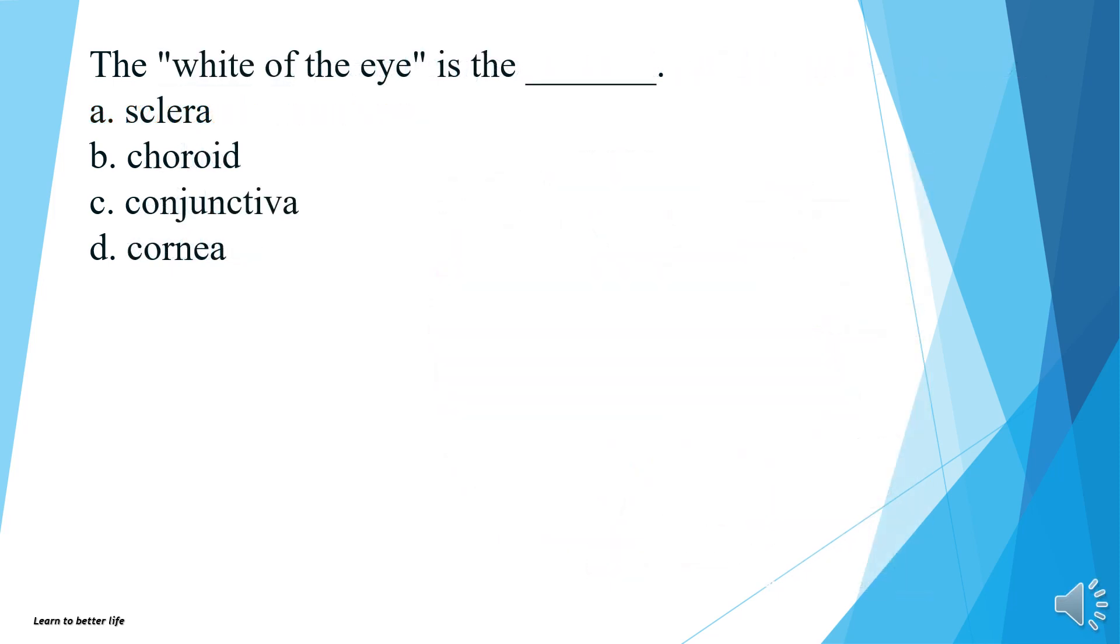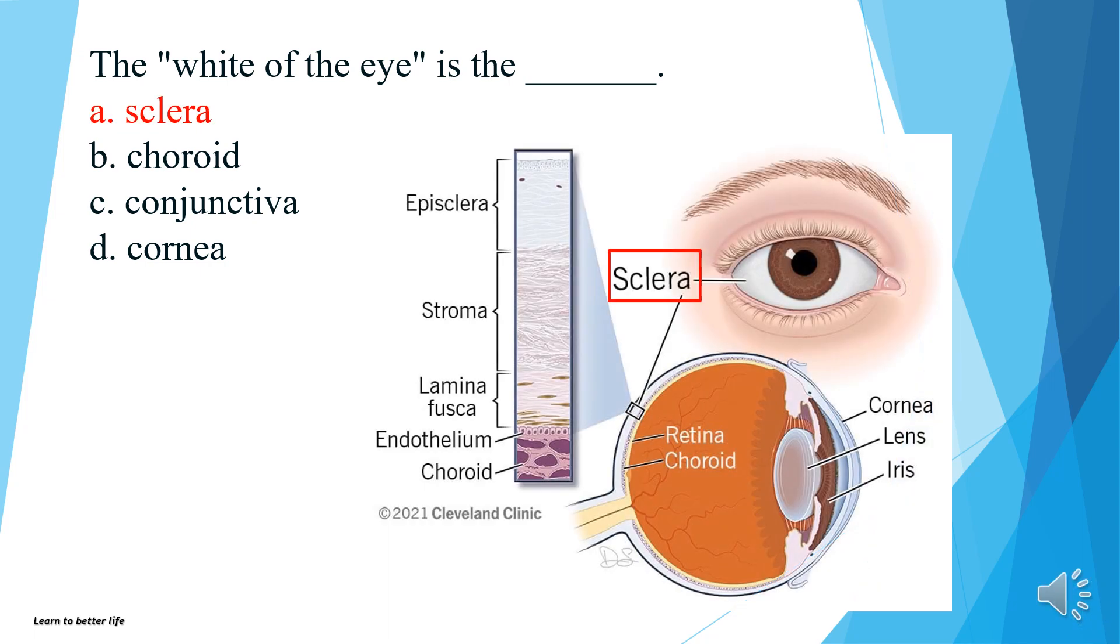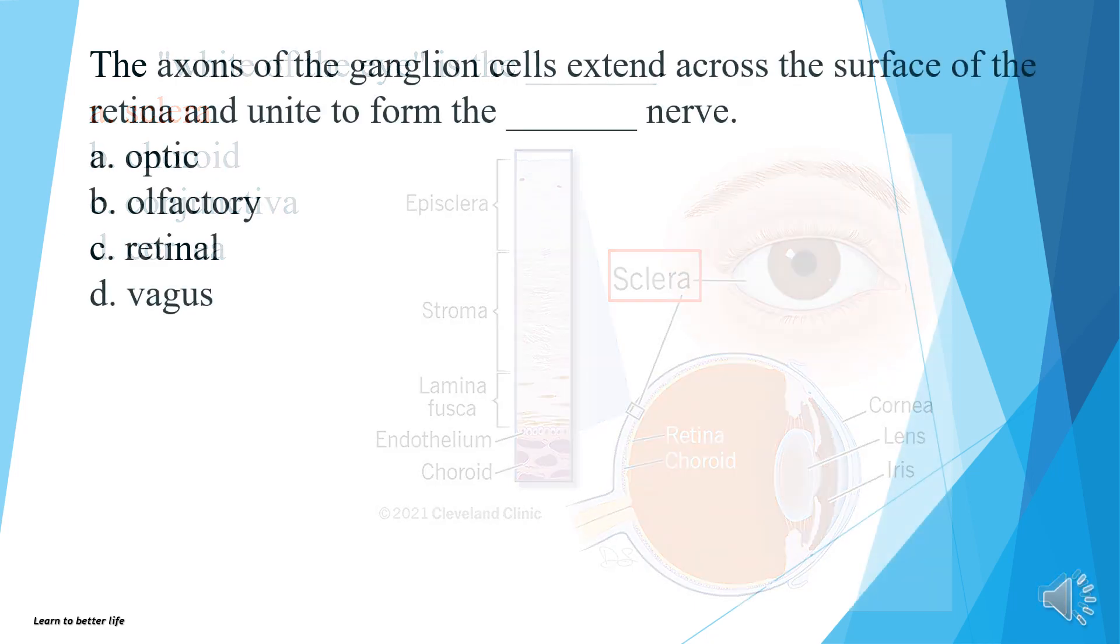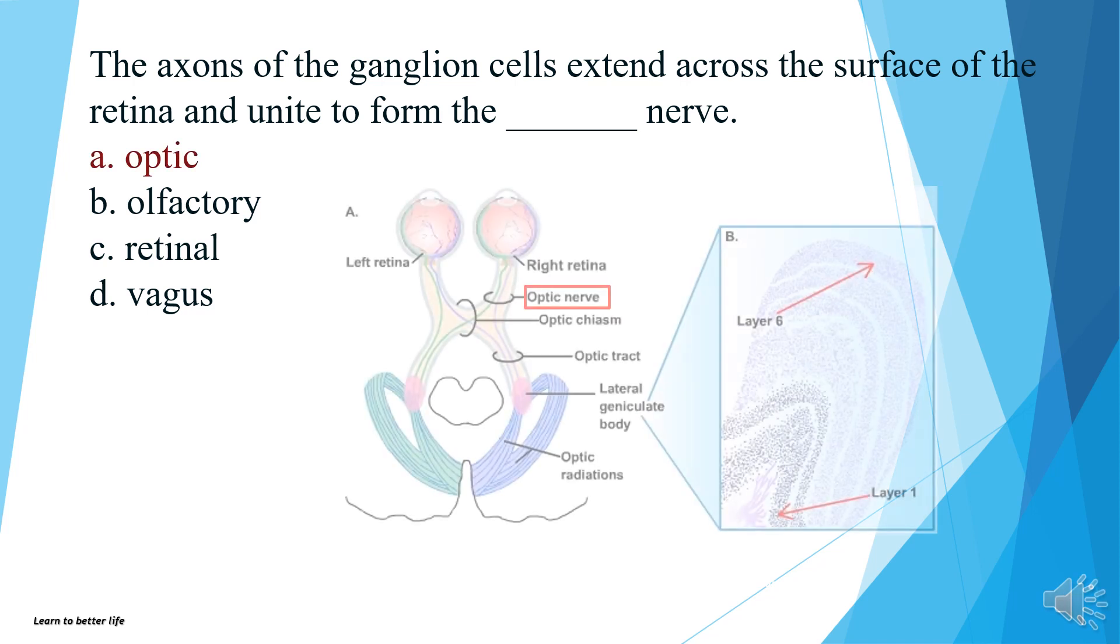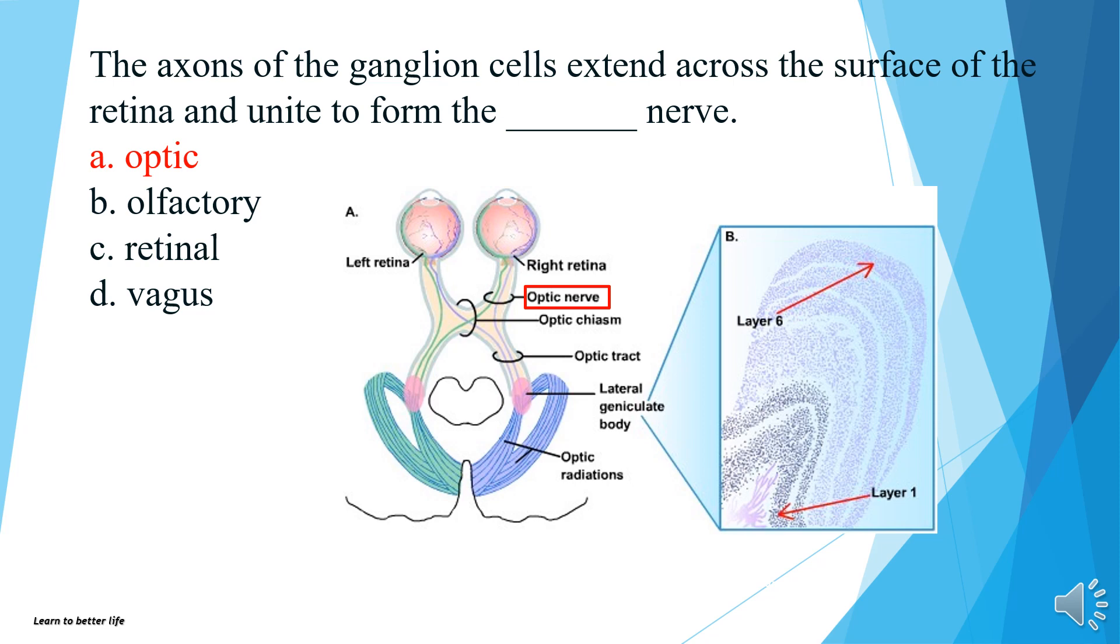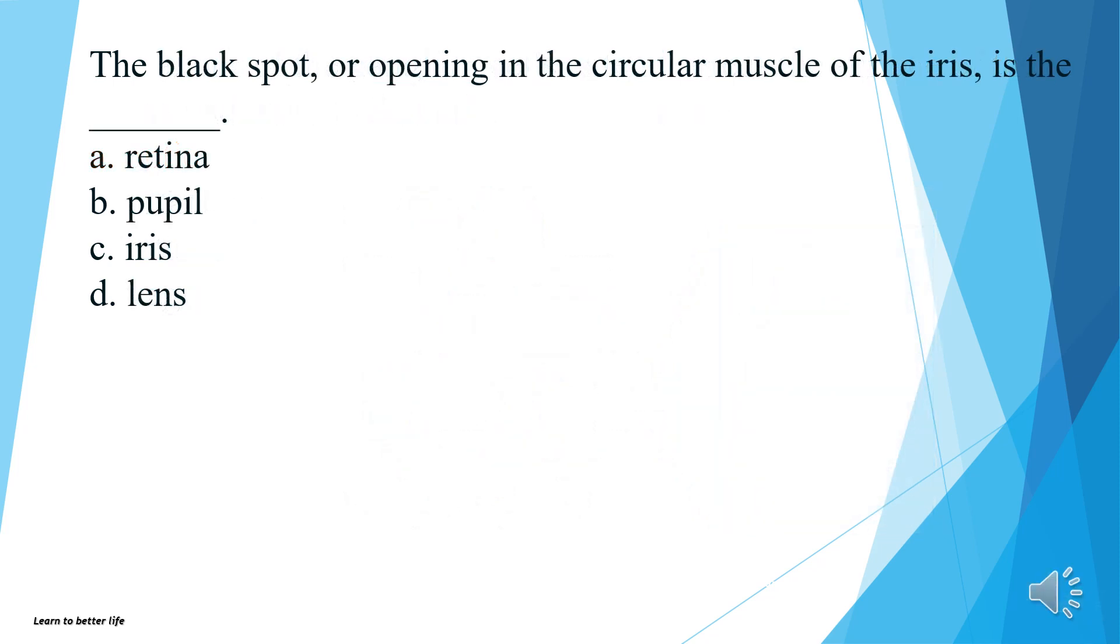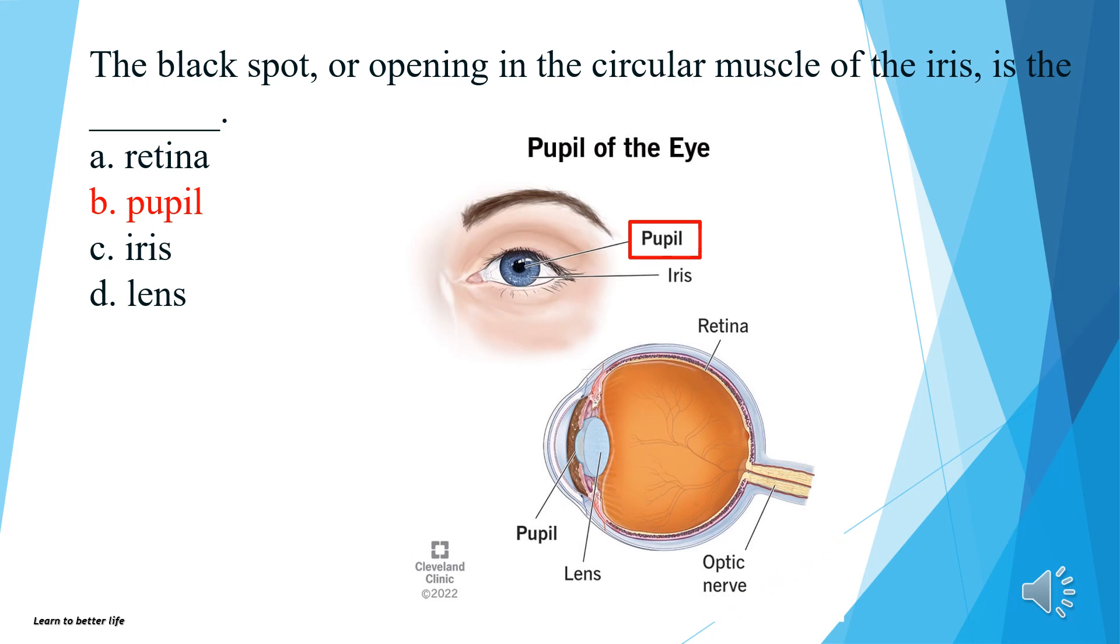The white of the eye is the sclera, choroid, conjunctiva, or cornea? The answer is A, sclera. The axons of the ganglion cells extend across the surface of the retina and unite to form the optic, olfactory, retinal, or vagus nerve? The answer is A, optic. The black spot, or opening in the circular muscle of the iris, is the retina, pupil, iris, or lens? The answer is B, pupil.